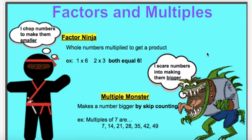Here's something that can help you remember the difference between the two. When you think of factors, think of a ninja. Ninjas chop and slice numbers to make them smaller. For example, I can chop the number six into one and six. I can also chop the number six into two and three, and I can multiply those numbers together to get my product.